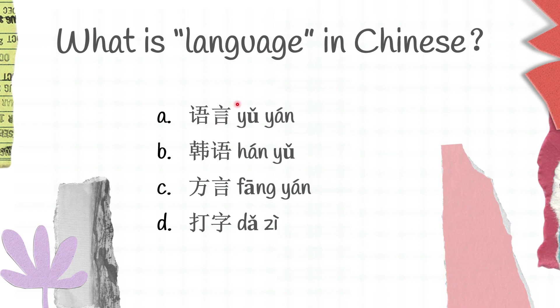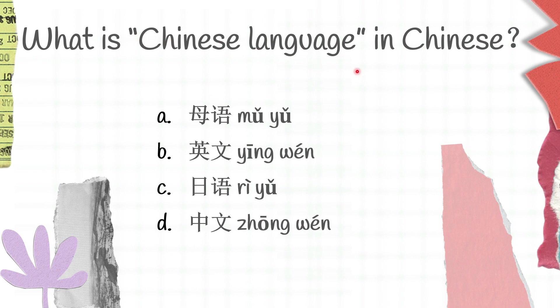Moving on to the next one: What is Chinese language in Chinese? A 母语, B 英文, C 日语, D 中文. Which one do you think is the correct answer? 母语 is mother tongue, 英文 is English, 日语 is Japanese language, 中文 is Chinese language. And the correct answer for this question is D — 中文.